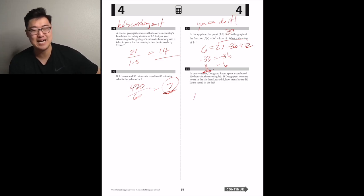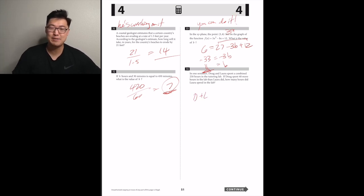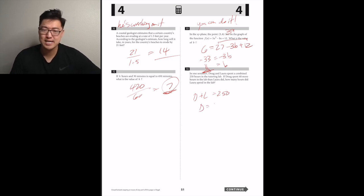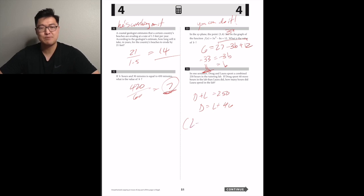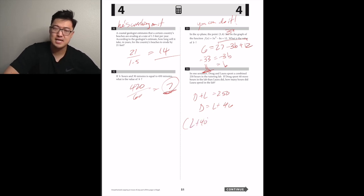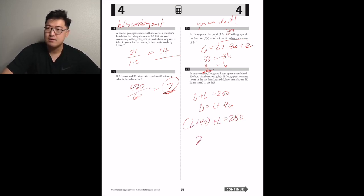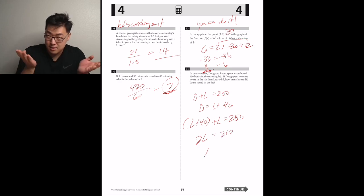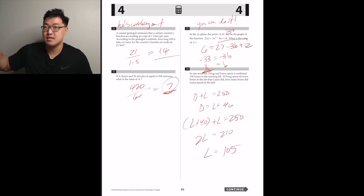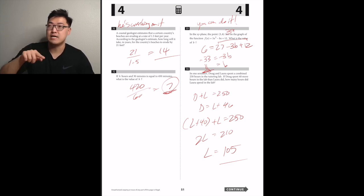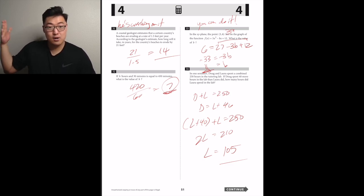In one semester, Doug and Laura spend a combined 250 hours in the tutoring lab. Doug spent 40 more hours than Laura. How many hours did Laura spend? Setting up: d + l = 250 and d = 40 + l. Substituting: 40 + 2l = 250, so 2l = 210, and l = 105.